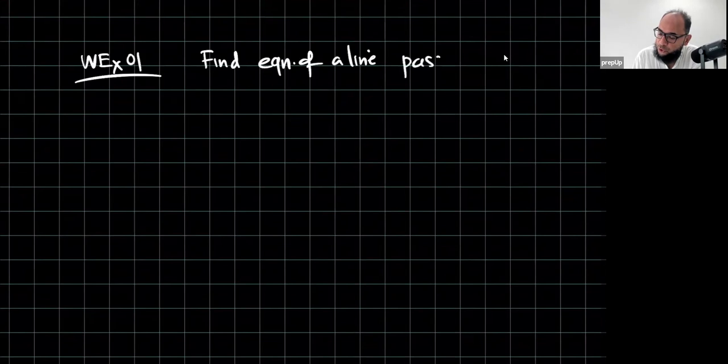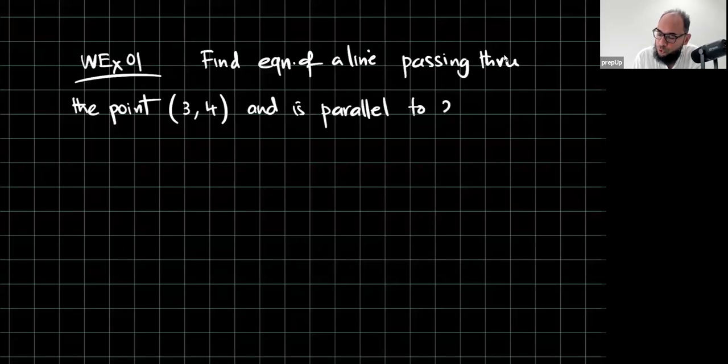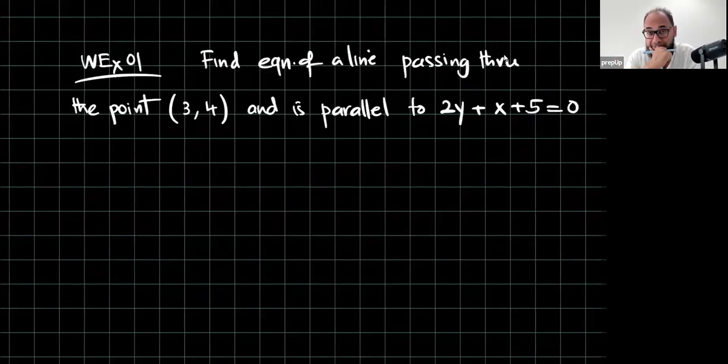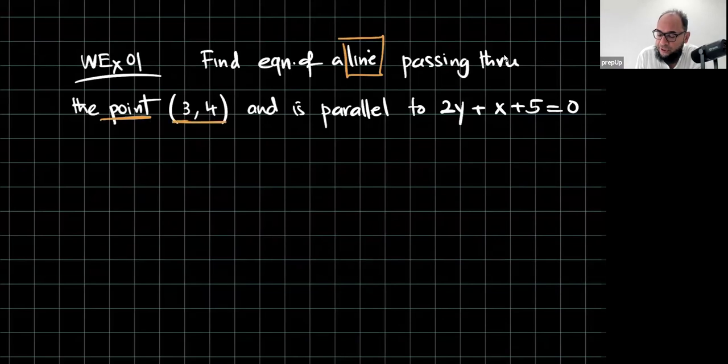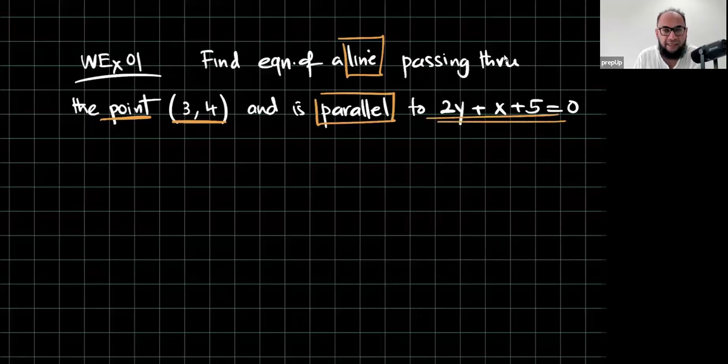I'll write worked example 1. The first question is, find equation of a line passing through the point (3,4) and is parallel to 2y + x + 5 = 0. So, there are two things to consider. The first thing, it's a line and it's passing through this point (3,4). The second thing, it is parallel to this particular line, something very simple.